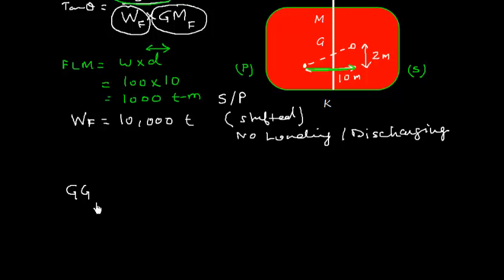First let me write the formula that GG1 will be W into D divided by WF, again the final W is used here. And this shift is in upward direction. The G was here and M was here, so GM is given as 1.5 meter. Now, I had shifted. Let's find out this W which is going to be, W was 100 and the distance shifted is 2 divided by 10,000.